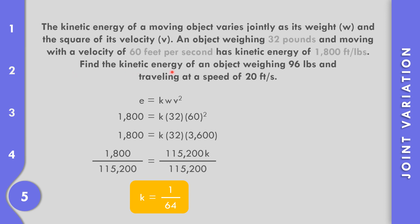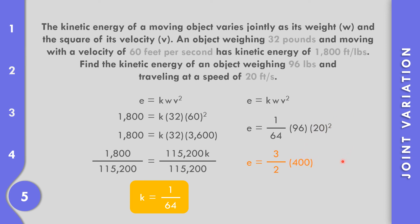Find the kinetic energy of an object weighing 96 pounds traveling at 20 feet per second. Using K equals 1 over 64: E equals (1/64) times 96 times 20 squared. Simplifying 96 over 64 gives 3 over 2, and 20 squared equals 400. So E equals (3/2) times 400, which is 1,200 divided by 2, equals 600 foot-pounds. The kinetic energy is 600 foot-pounds.